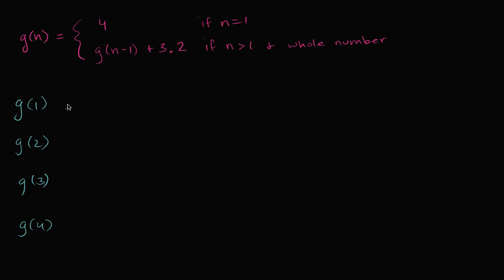All right, now let's work through this together. So g of one — if n is equal to one, well then we're going to hit this case right over here. If n is equal to one, g is equal to four.